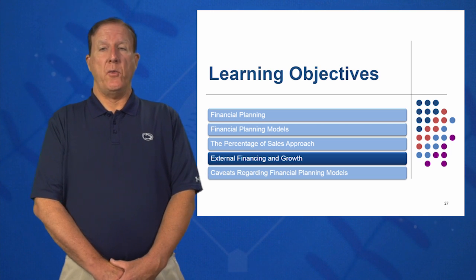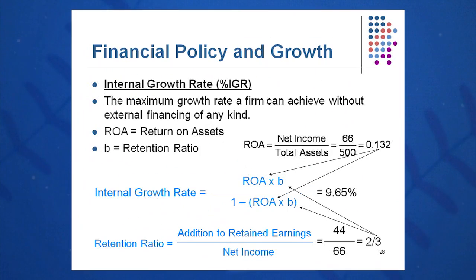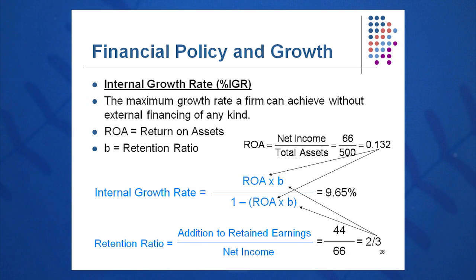With no equity financing, while maintaining our debt-to-equity ratio. We said it takes money to make money, so the question is how much. In the last example, we had a plug of 47.2 needed to grow the company at 20%. The question is: how fast can I grow without any plug whatsoever? We would have to go get long-term debt of 47.2 million to grow at 20%. This is called the internal growth rate.